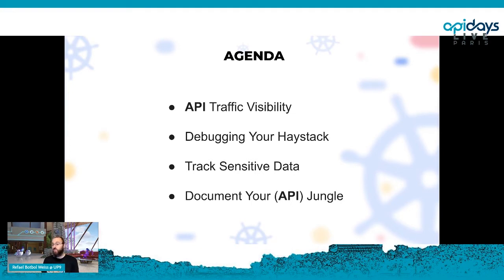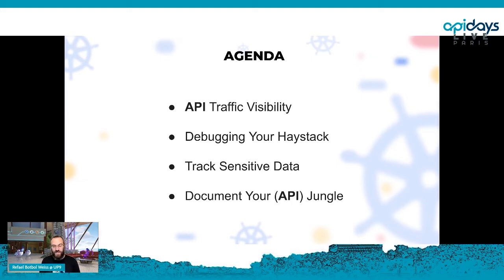In the agenda today I'm going to talk about: what is API traffic visibility; how you can debug your haystack — microservices tend to be sticky, you start with 10 and before you know it you have hundreds; tracking sensitive data — and spoiler alert, I'll show something not yet in prod, coming in two weeks, prepared especially for API Days Paris; and how to document your APIs automatically instead of doing it all manually.